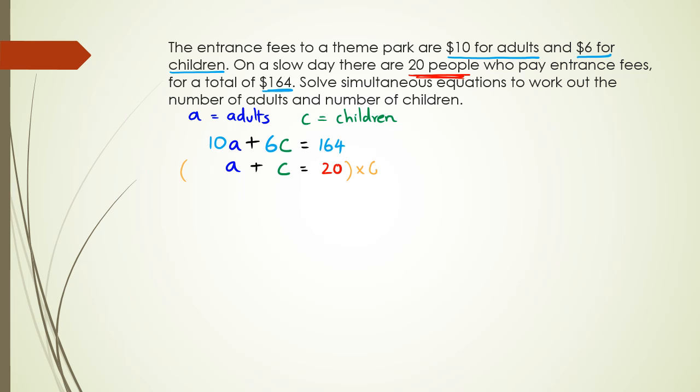That means I have, I'm going to write my first equation, which is still 10a plus 6c equals 164. And now for my second equation, I have a times 6, which is 6a, c times 6, which is 6c, and 20 times 6, which is 120.